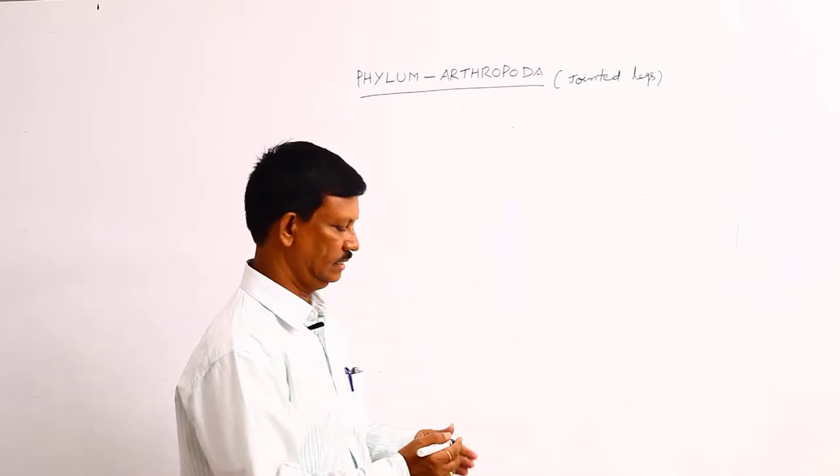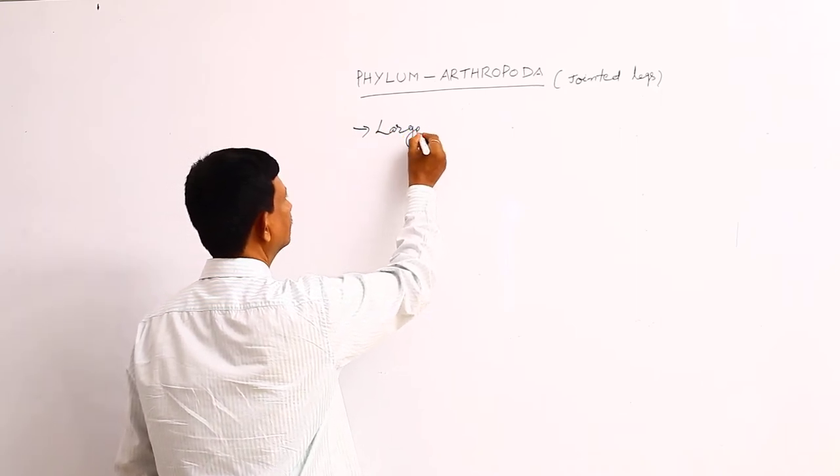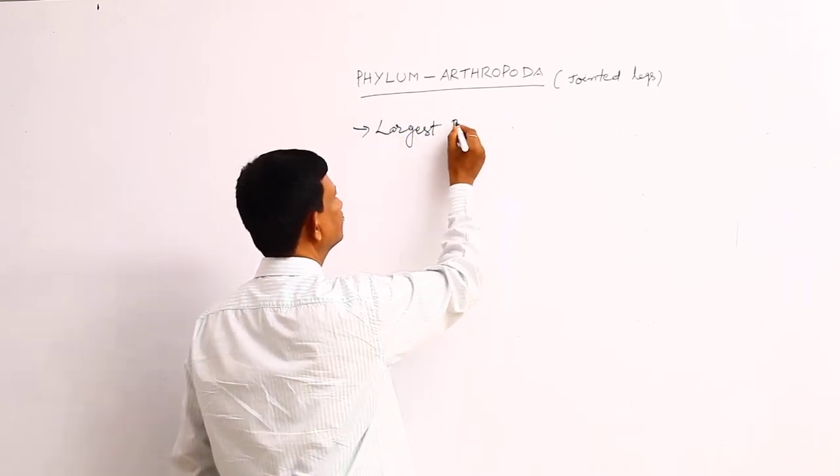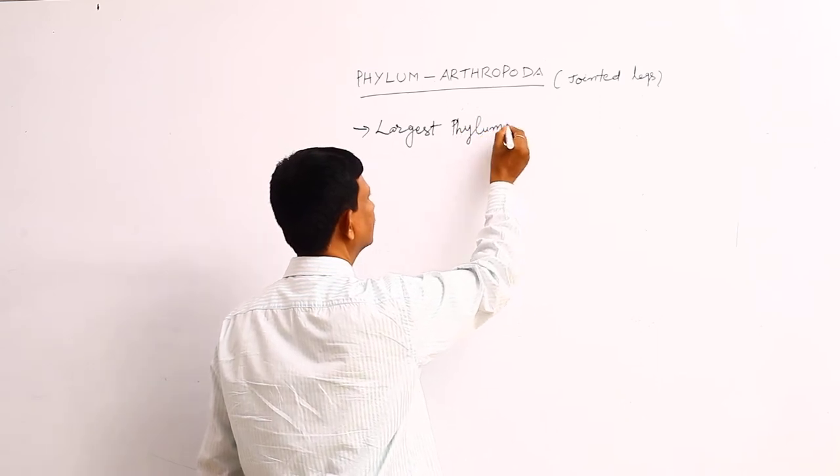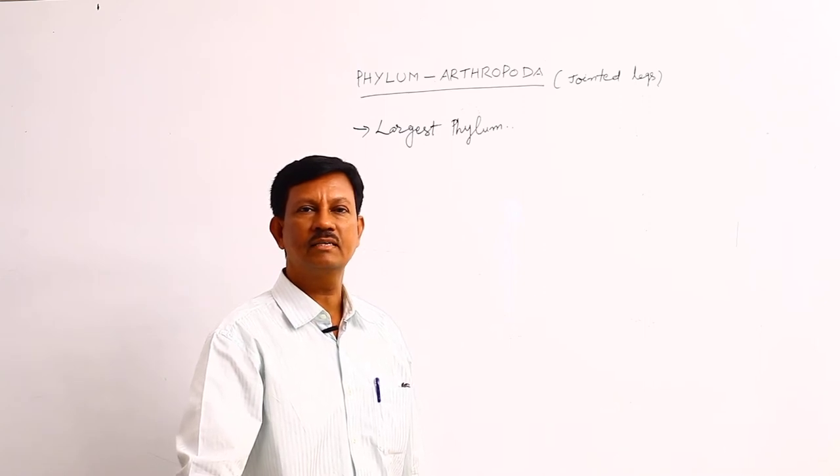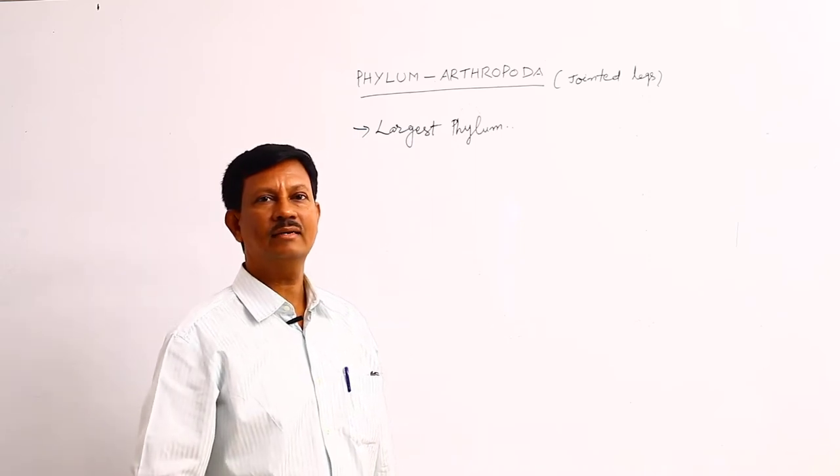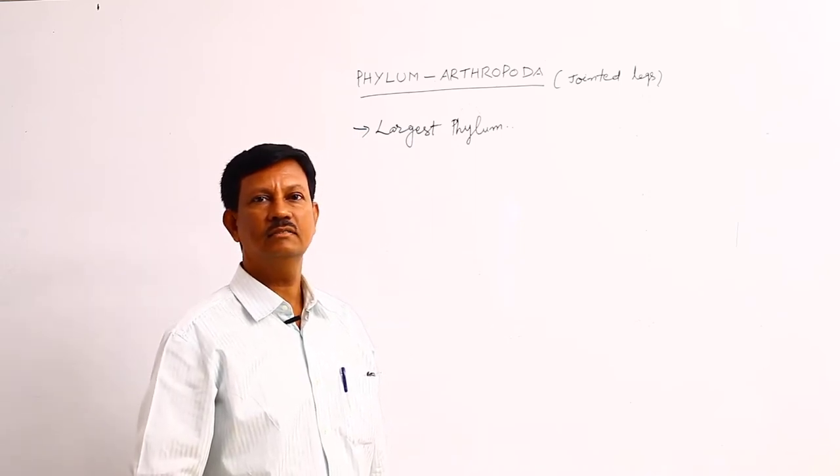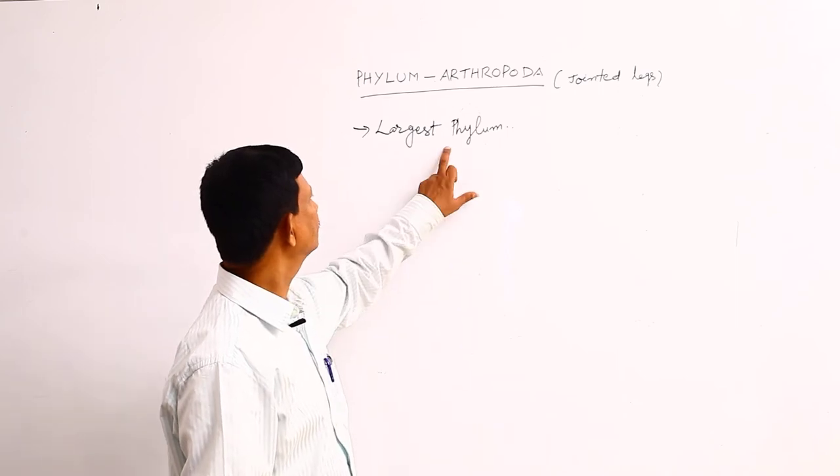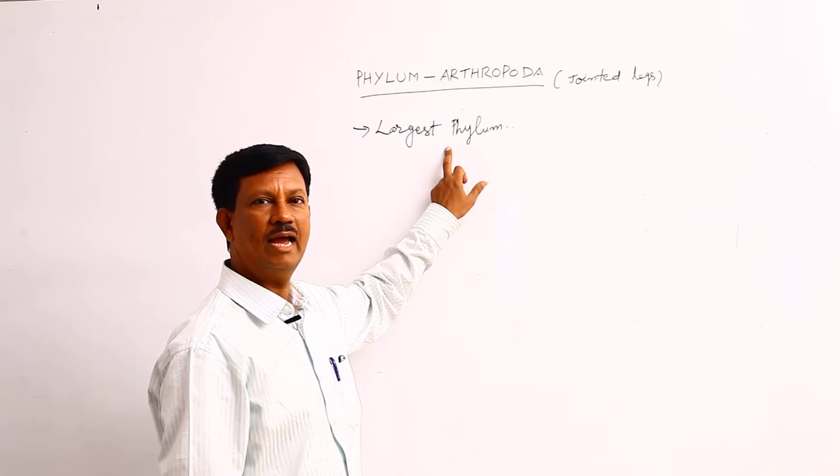This is the largest phylum in the animal kingdom. Largest phylum means there are a large number of species found in this phylum. It includes nearly 1,10,000 known species. When compared to other phyla, this phylum has a large number of animals, that's why it is known as the largest phylum in the animal kingdom.